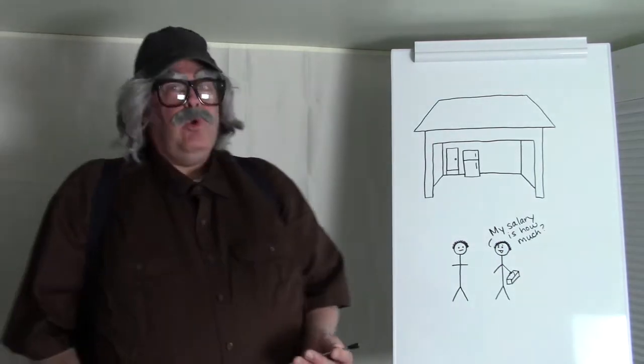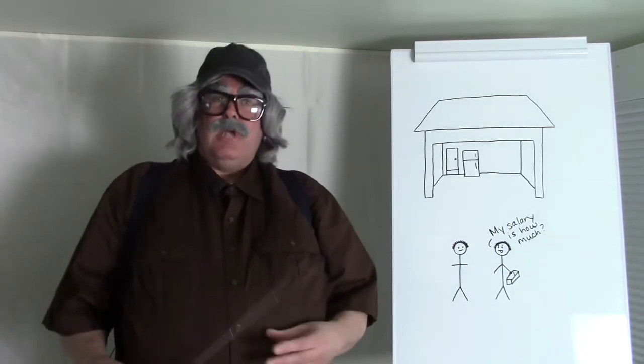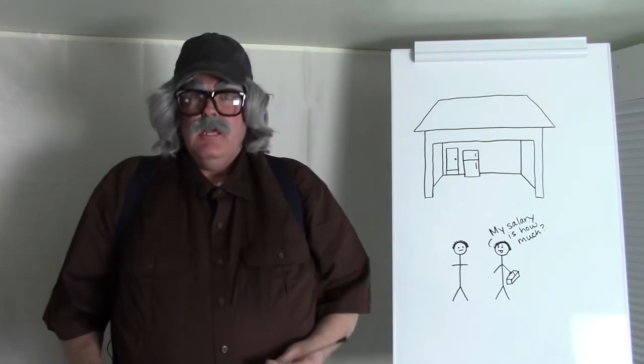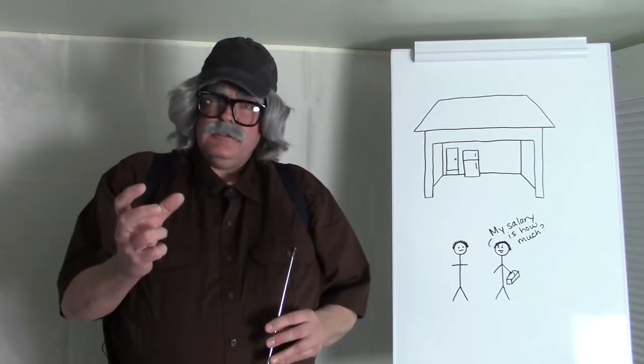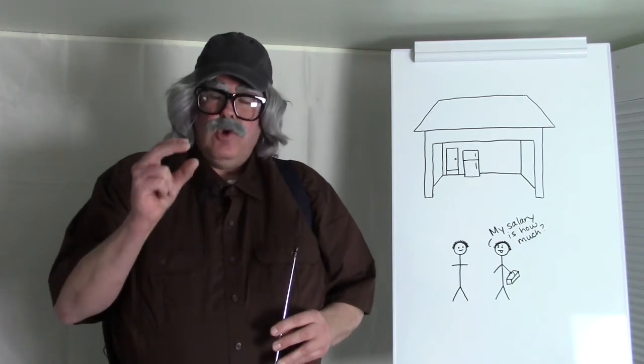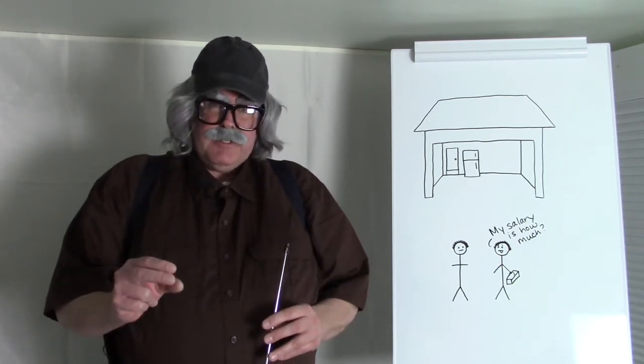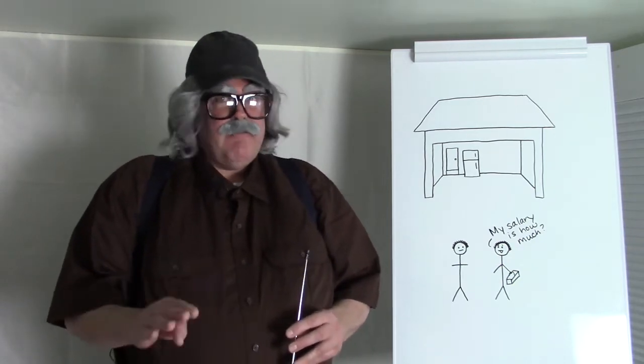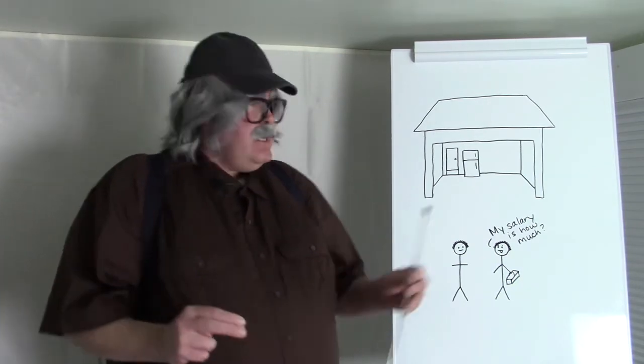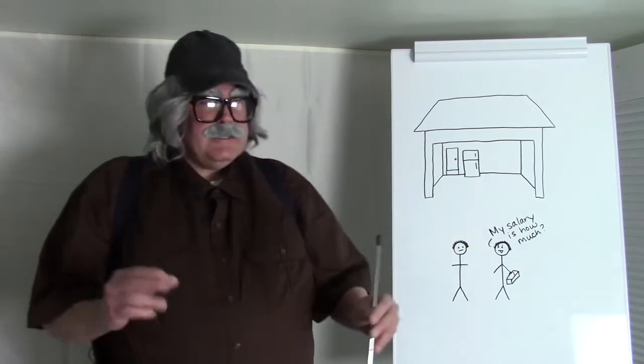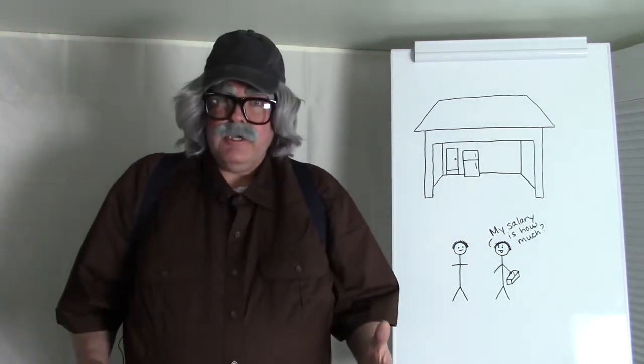Some of the refrigerators of old, ones made when I was a wee little tot in the 60s and 70s, those were different. They had cold controls with dials. Those dials, the cold control would sense the temperature of the freezer, not the refrigerator. Since it sensed the temperature of the freezer, it was looking for the unit to stay at right around zero degrees.